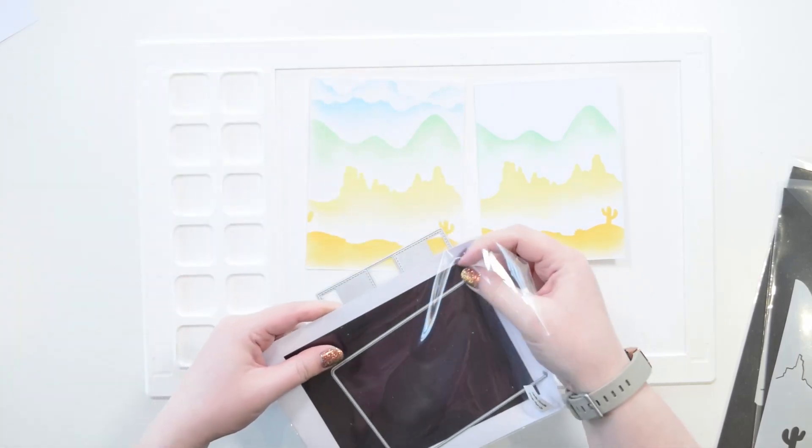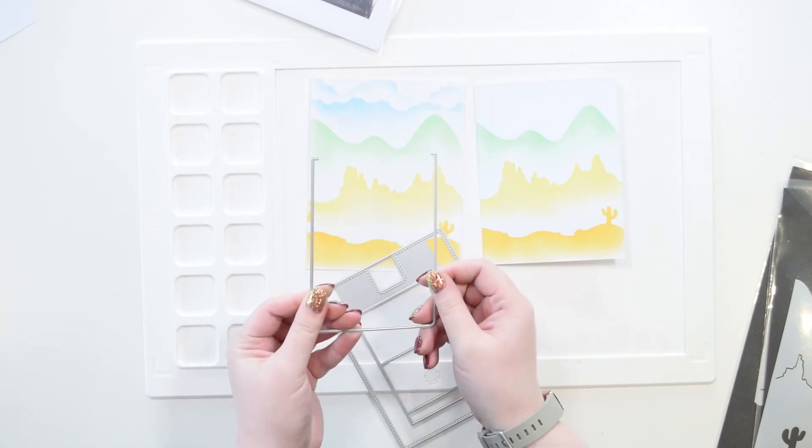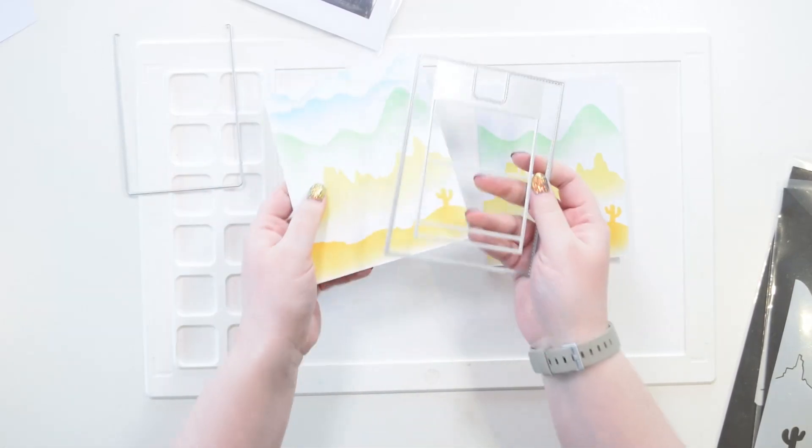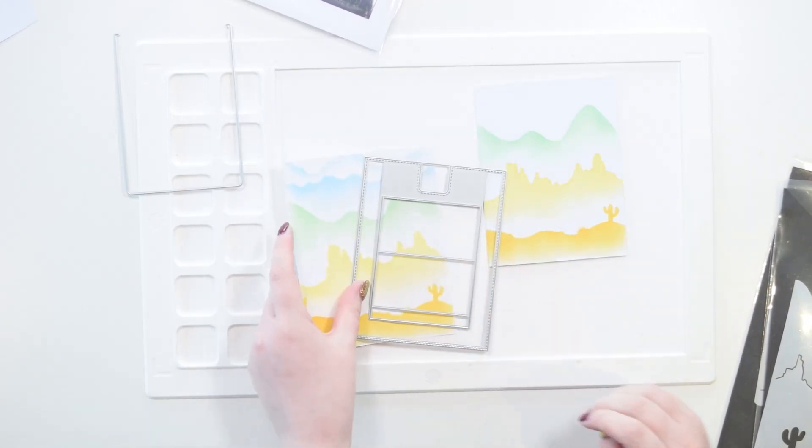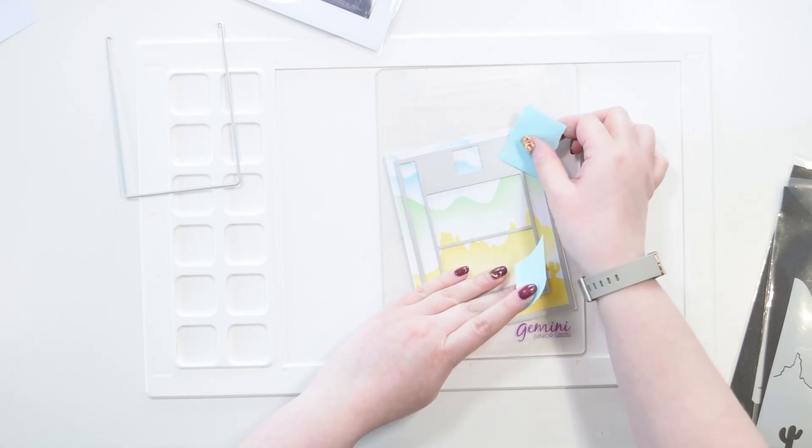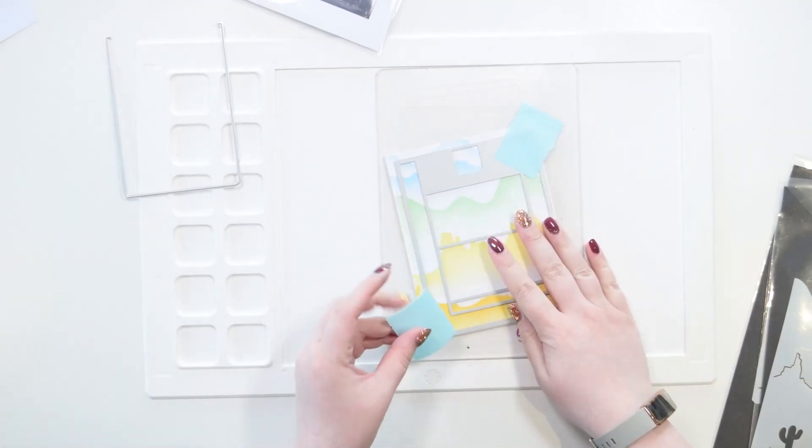You're then gonna grab this second die, this sort of rectangle that's missing its edge, and this is gonna create your pull-out section. But first let's create the front panel of the card.